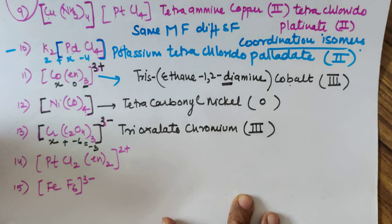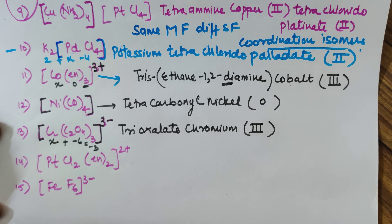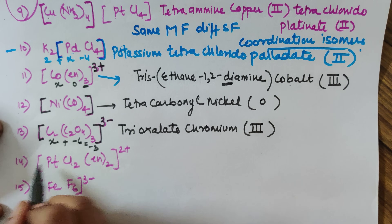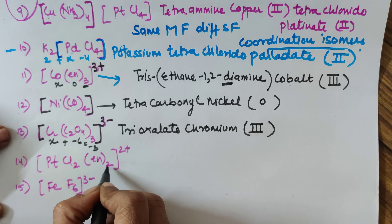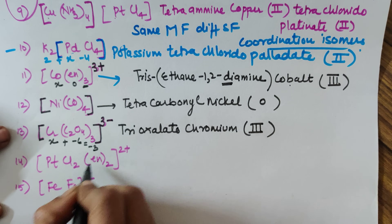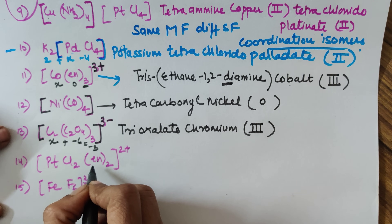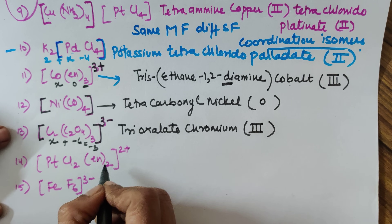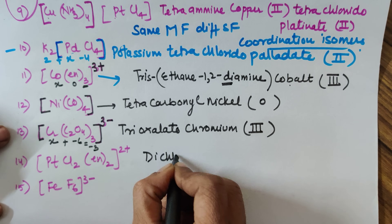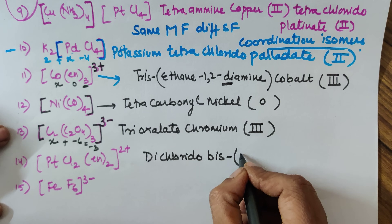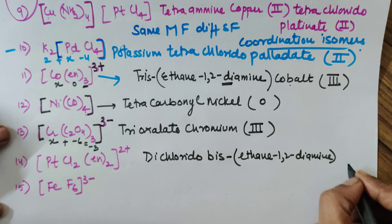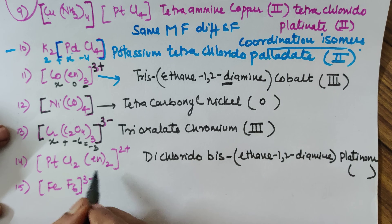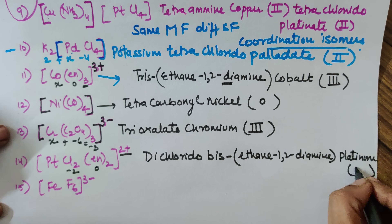Moving to examples fourteen and fifteen — try to pause and do these yourself. For example fourteen, since it has a 2+ charge, platinum remains platinum. You have chloride and ethane-1,2-diamine twice; since the ligand name contains 'di', you use 'bis'. The name is dichlorido bis(ethane-1,2-diamine) platinum. For the oxidation number: ethane-1,2-diamine is 0, two chlorides give minus 2, net charge is plus 2, so platinum is plus 4.